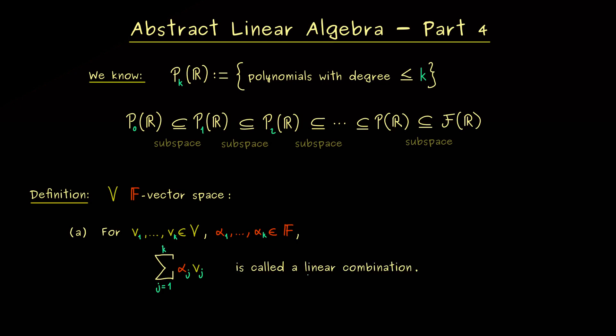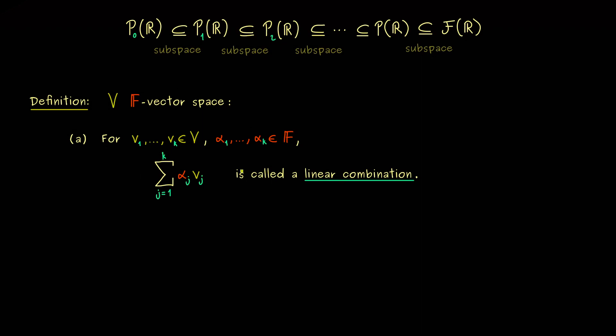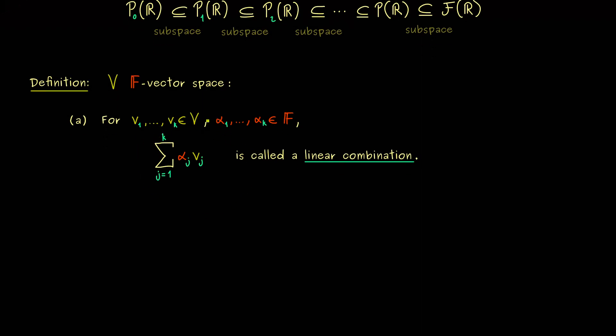And then we just go from 1 to k to have the whole sum. Ok so this is what we call a general linear combination and the important thing to remember is that we always have a finite sum. So whenever someone says take a linear combination it always means that you should take a finite number of vectors and do this sum here.